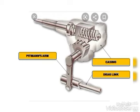The oscillatory motion of the pitman arm is changed into straight line motion. The pitman arm's oscillatory motion is transferred through the drag link, converting it into straight line motion, and this force is then given to the different wheels for steering.